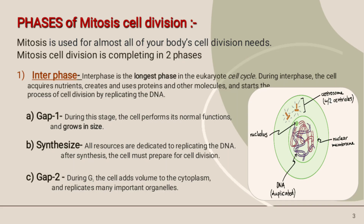Phases of mitosis cell division. Mitosis is used for almost all of your body's cell division needs. Mitosis cell division is completed in two phases: first is interphase and second is cell division phase.